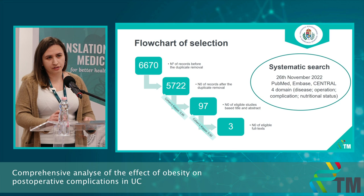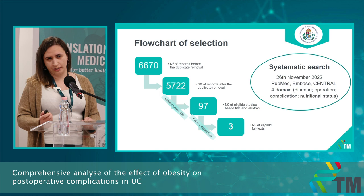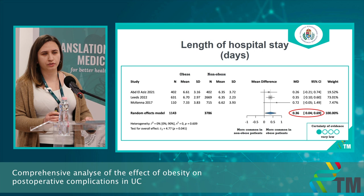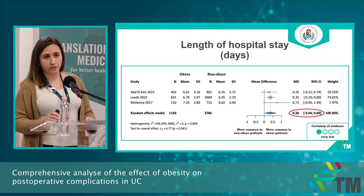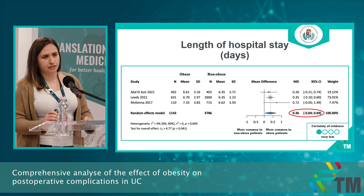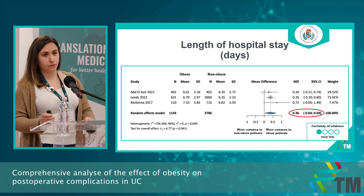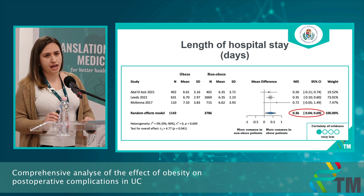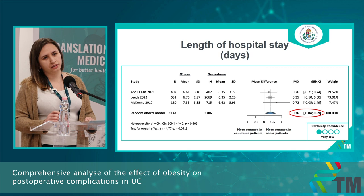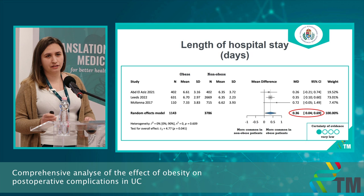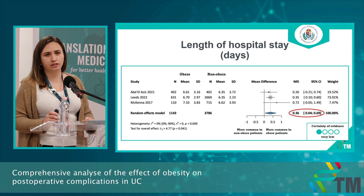At the end of the selection we found three eligible full texts. We had three main outcomes. The first is the length of hospital stay. We included three retrospective cohort studies — the first and second were propensity score studies, which is why heterogeneity could be so low. As a measure of effect we used mean difference, and the result was 0.36. Although this reached statistical significance, we did not believe that the six extra hours obese patients spend in hospital is clinically relevant.